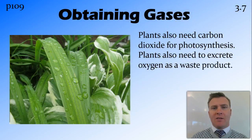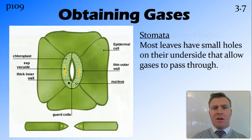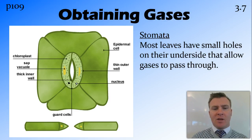Photosynthesis also requires carbon dioxide, so plants need a way of getting carbon dioxide from the atmosphere. Photosynthesis produces oxygen as a waste product, so they need to be able to get that oxygen out of the leaves. One of the ways they do this is by having small holes on the underside of the leaf called stomata. Stomata consist of a hole, or stoma, surrounded by guard cells in the epidermal layer. Those guard cells can open or close depending on whether gas needs to get out or come in, or whether the plant is trying to conserve water, because with the gas that comes out they also lose water.